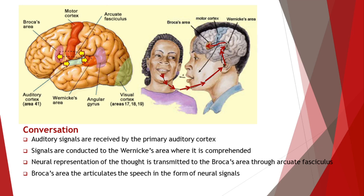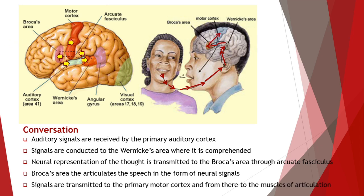Broca's area then articulates the speech and a reply is formulated with grammatical perfection. This neural signal for speech production is then sent to the primary motor cortex, which sends signals to the muscles of the face, jaw, tongue, and larynx, and the reply comes from the person as voice. This is what happens during conversation.